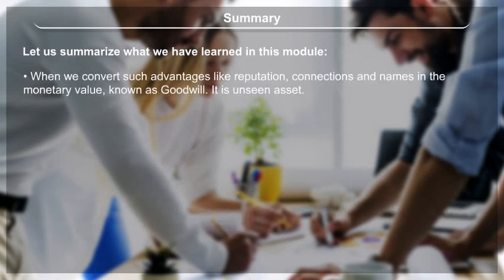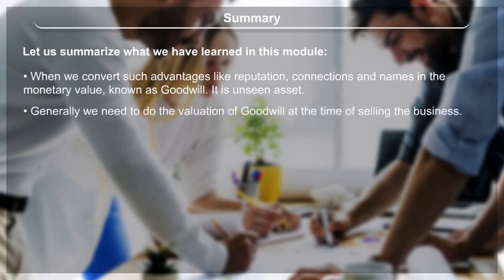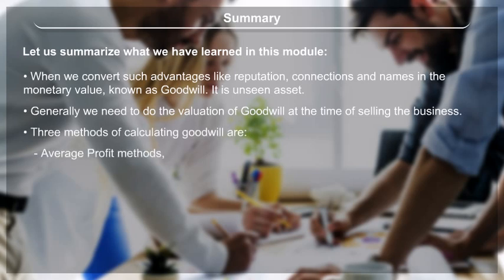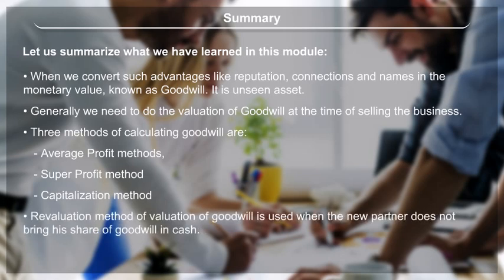When advantages like reputation, connections and names are converted into monetary value, that is known as goodwill — an unseen asset. Generally, valuation of goodwill is done at the time of selling the business. Three methods of calculating goodwill are: average profit method, super profit method, and capitalization method. The revaluation method of valuation of goodwill is used when the new partner does not bring his share of goodwill in cash.